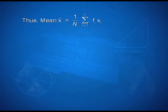Thus, mean x bar is equal to 1 upon n into summation i varying from 1 to 7 fi xi, that is equal to 3100 upon 50, that is 62.